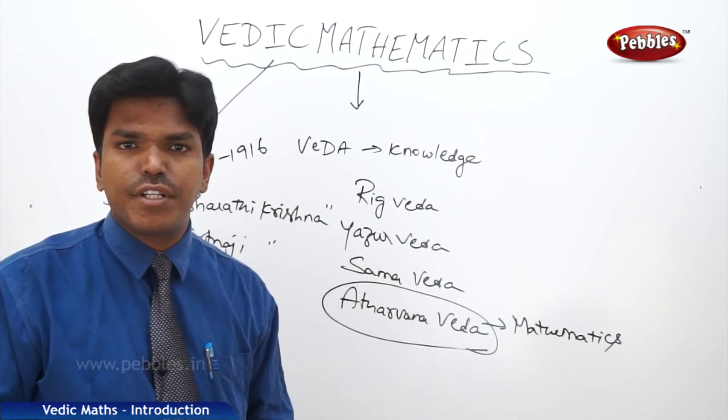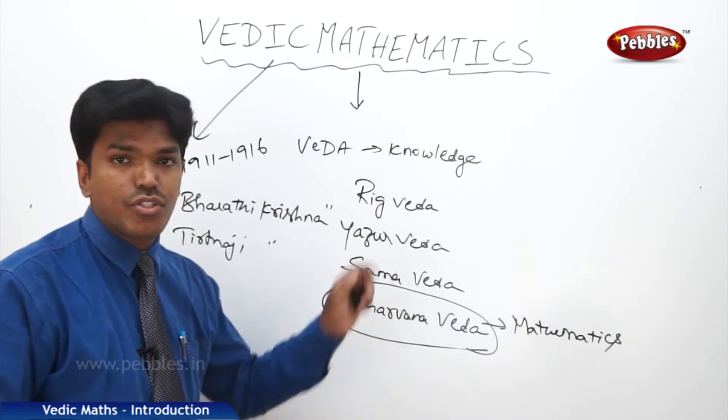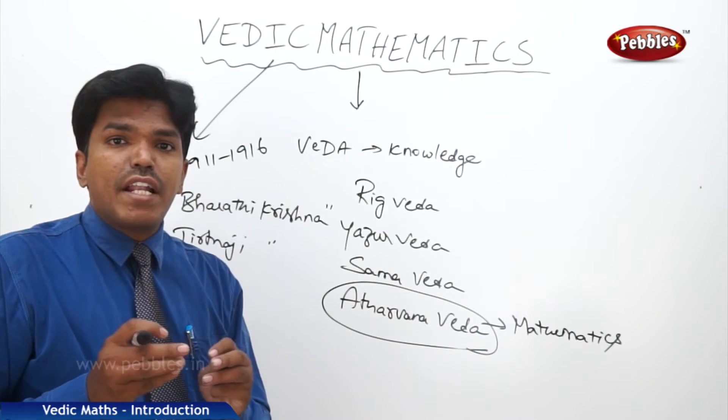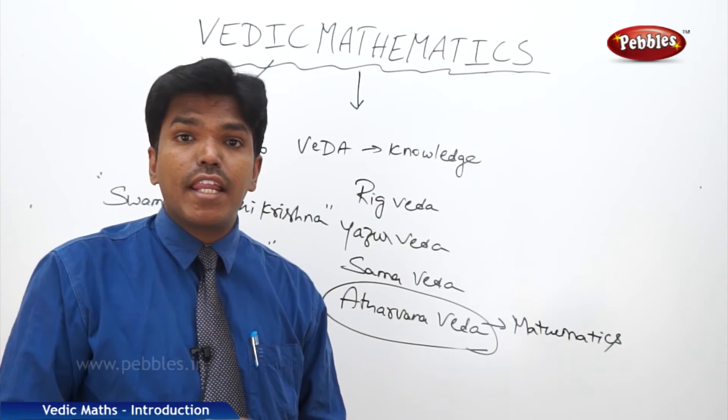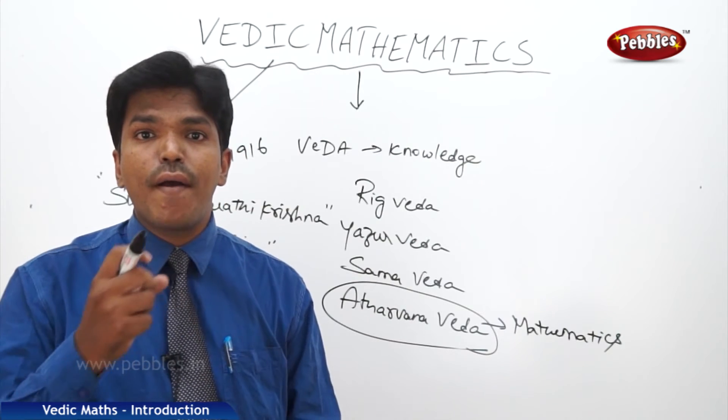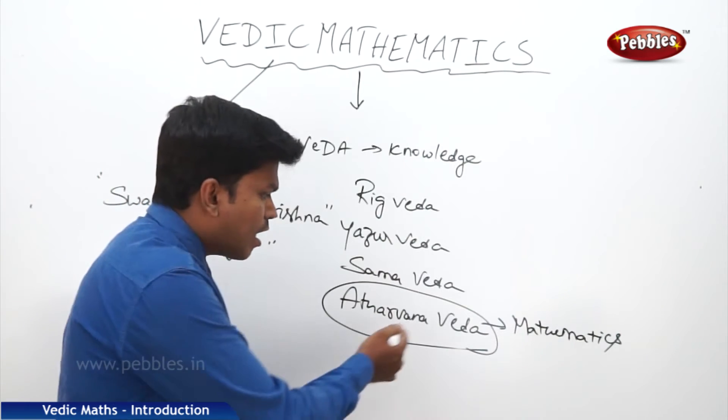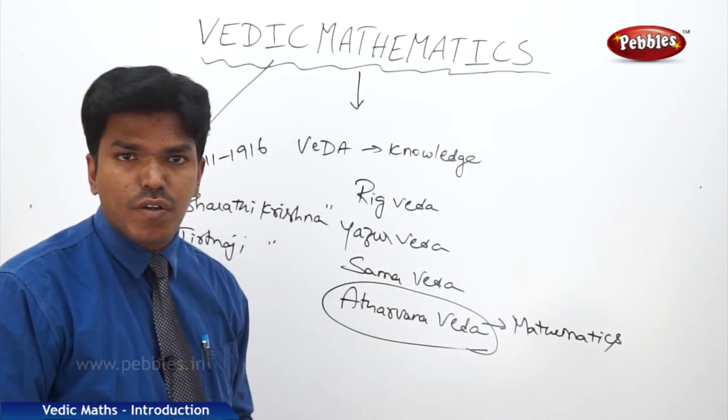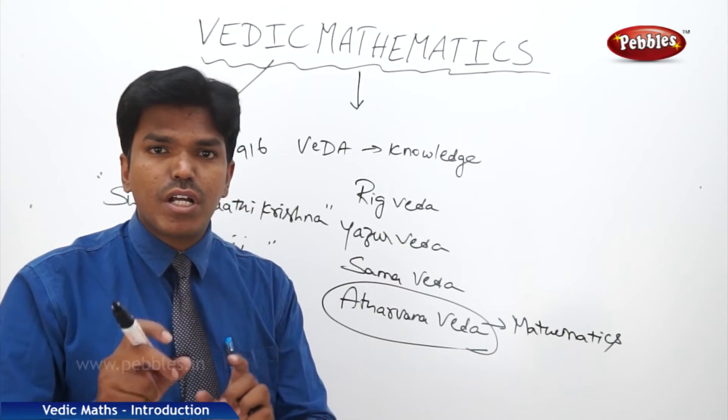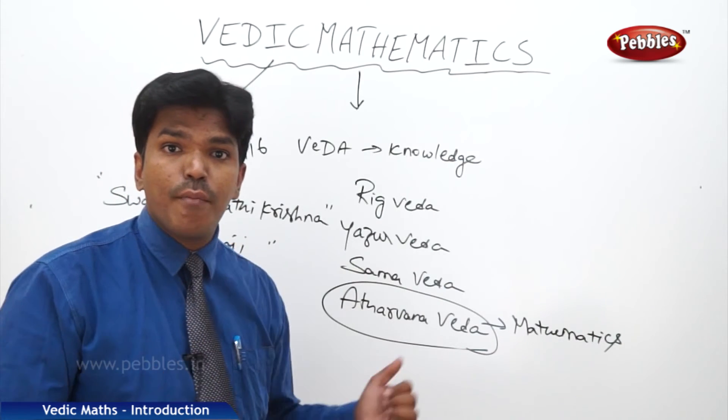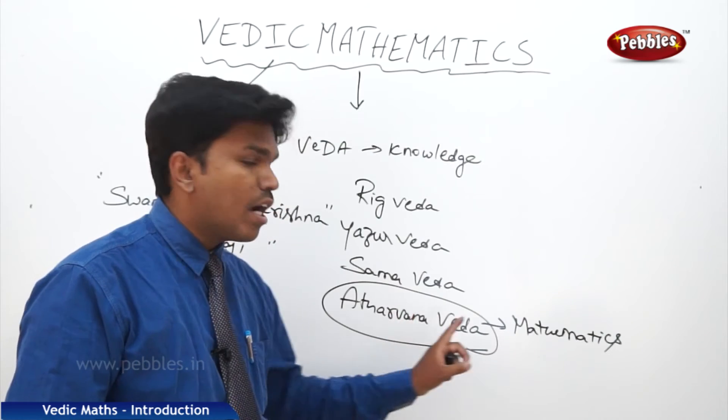What this great personality did between 1911 to 1916? He went deep into the meditation and he recollected all the sutras which are related to the maths from the fourth Veda, Atharvana Veda.